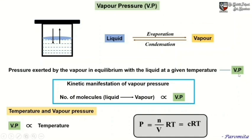Now we will see the kinetic manifestation of vapor pressure. As the number of molecules that escape from the surface of the liquid to form the vapor increases, the vapor pressure also increases. That means more the escaping tendency of the liquid molecules from the liquid phase to the vapor phase, more will be the vapor pressure.